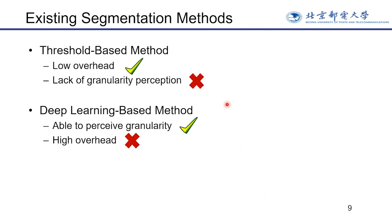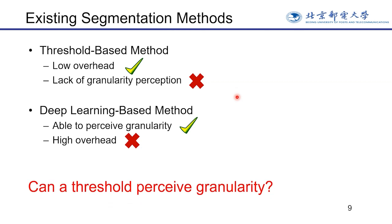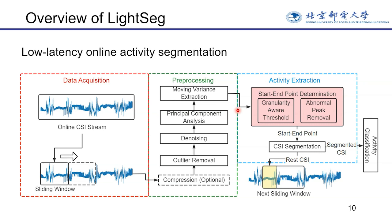To sum up, the two existing segmentation methods have their own advantages and disadvantages. Can we combine their common advantages? Specifically, is it possible to give a threshold the ability to perceive activity granularity? To achieve this goal, we propose a low-latency online activity segmentation method, LISAC.